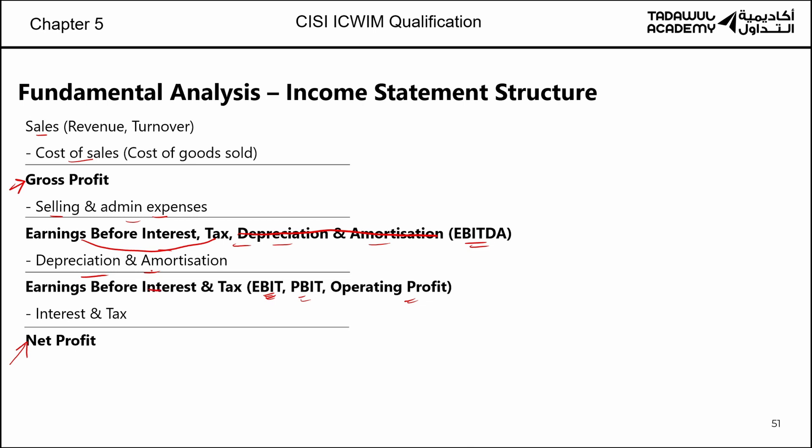Once you remove the interest and tax, you get the net earnings. The question of why EBIT is the most popular profitability number among investors globally: if you invest in Apple (US), HSBC (UK), and Deutsche Bank (Germany), you care about EBITDA more than net profit.